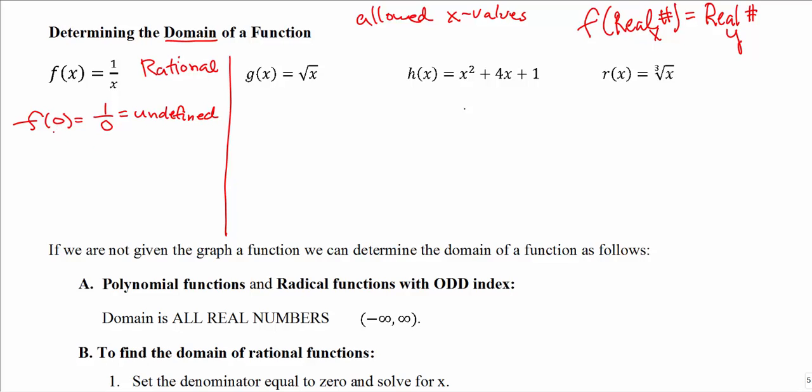If you put a 0 in — that's a real number — we get out undefined. We're supposed to put in a real number and only get real numbers out. I put a 0 in but I don't get a real number out; we get undefined. Undefined is not a number, it's a concept. So we have to exclude any x value from the domain that does not give us a real number out.